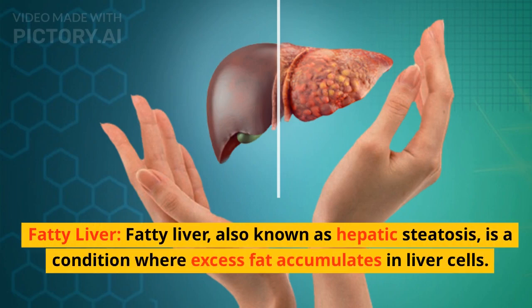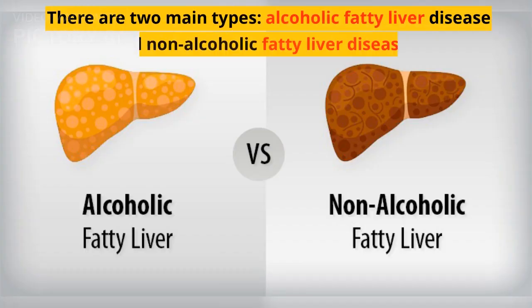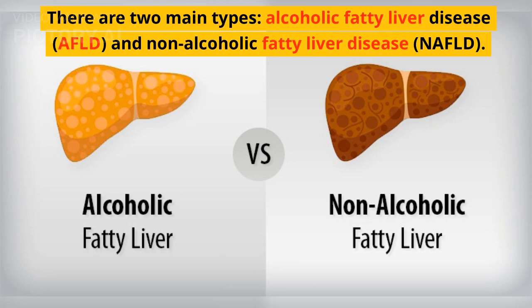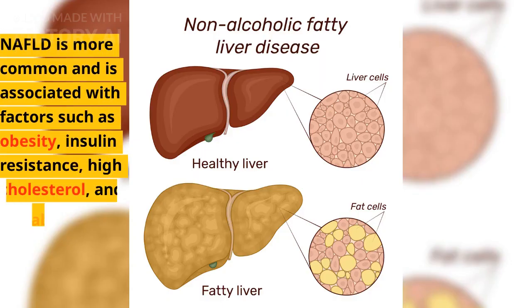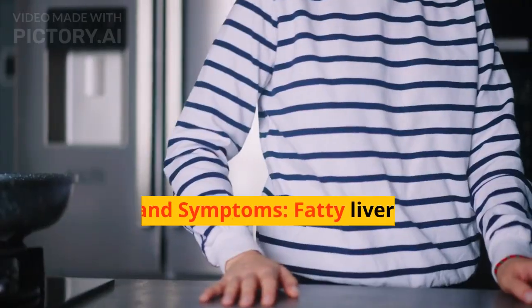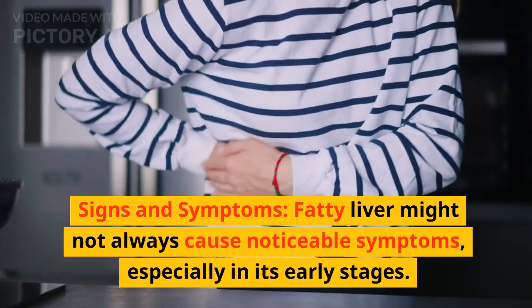Fatty liver, also known as hepatic steatosis, is a condition where excess fat accumulates in liver cells. There are two main types: alcoholic fatty liver disease (AFLD) and non-alcoholic fatty liver disease (NAFLD). NAFLD is more common and is associated with factors such as obesity, insulin resistance, high cholesterol, and metabolic syndrome.